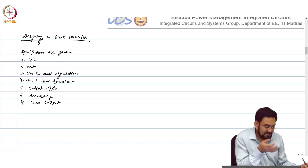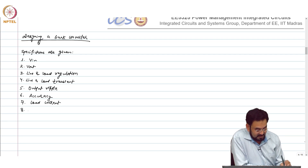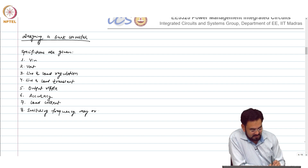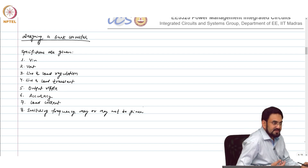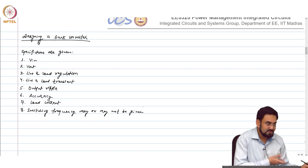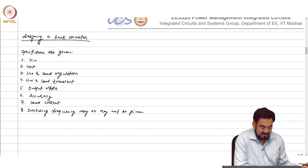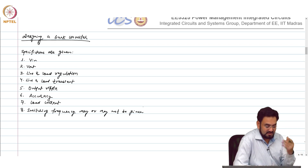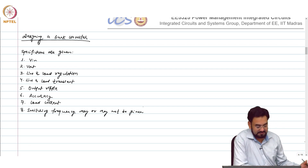These are the key specifications; you may be given more, like switching frequency — you may or may not be given it. If the switching frequency is given, it is pretty straightforward: based on the ripple voltage you choose L and C values. But if it is not given, then you have to do a bit more work to find out what will be the optimum switching frequency for the voltage and load current you are designing for.